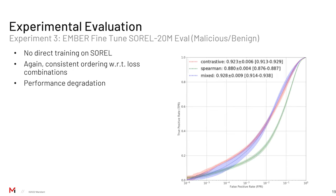In our third experiment, we took the detector fine-tuned on EMBER and evaluated it on the SOREL test partition. We see a performance decay, and the performance is not terribly impressive, but we still see a similar ordering. This isn't surprising — we're talking about fine-tuning on one dataset and evaluating on another dataset with a classifier that wasn't exceptional in the first place.